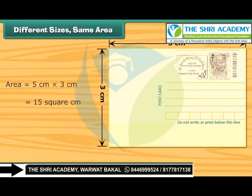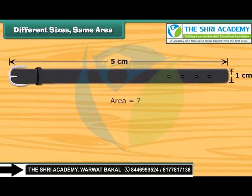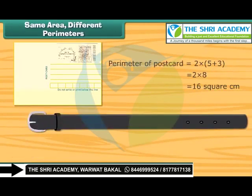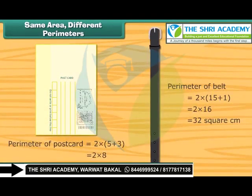Look at this postcard — its area is equal to 15 square centimeters. The area of this belt is also 15 square centimeters. Both the postcard and belt have the same area, but their sizes are different. Do both have the same perimeter? The perimeter of the postcard is 16 centimeters, while the perimeter of the belt is 32 centimeters. Thus, things with the same area can take different forms, and their perimeters can be same or different.